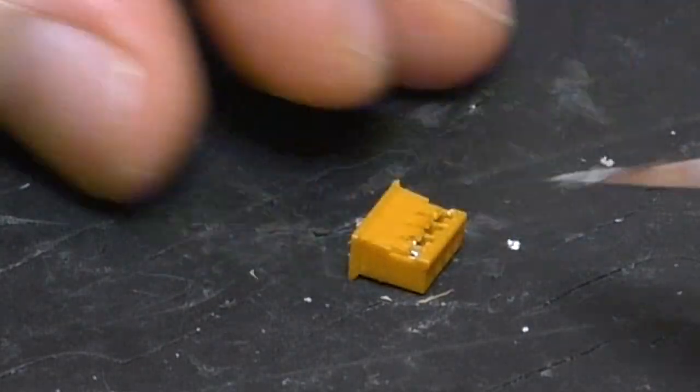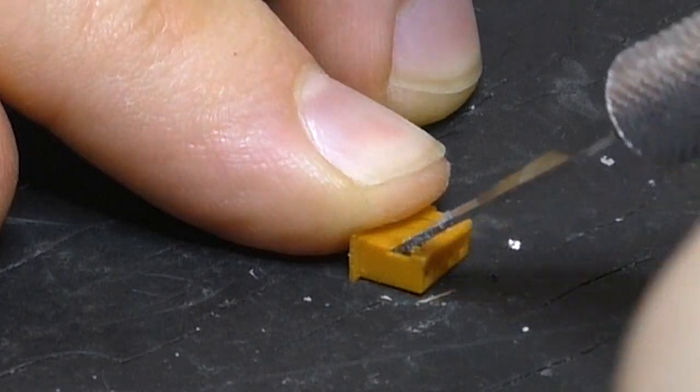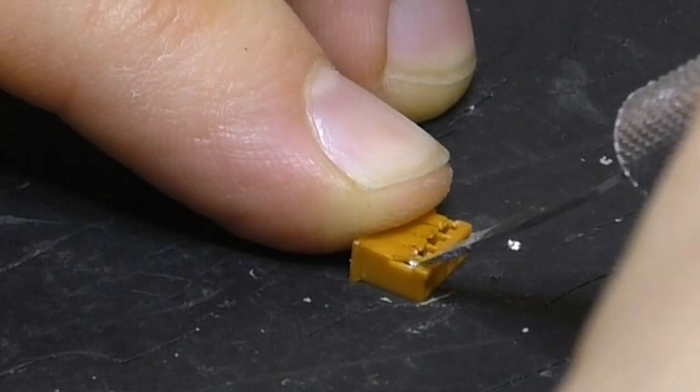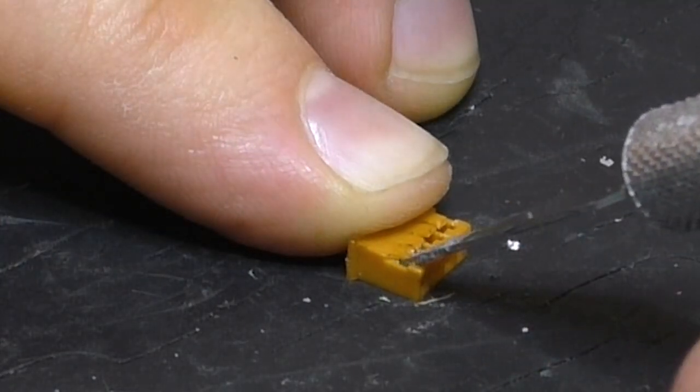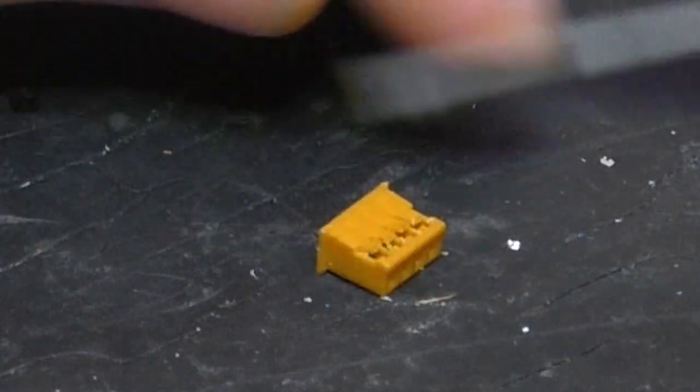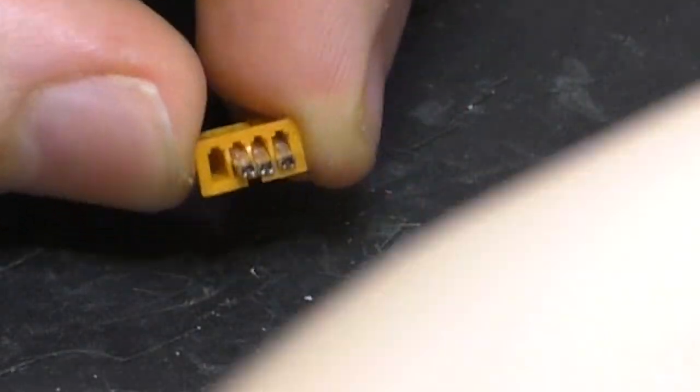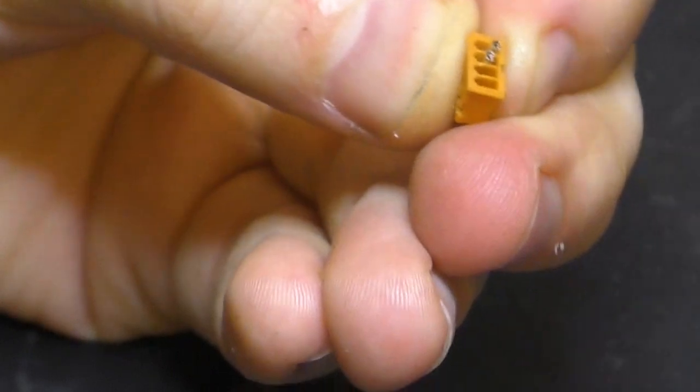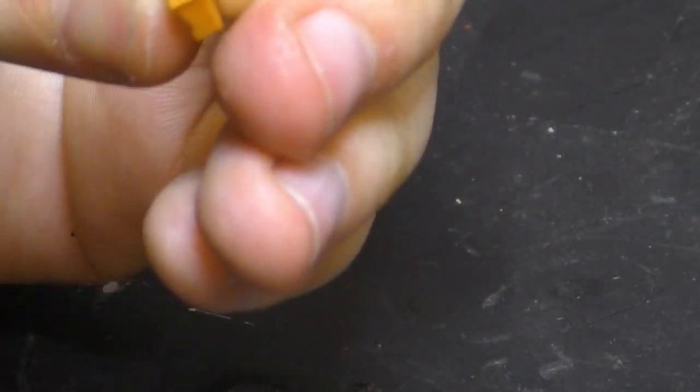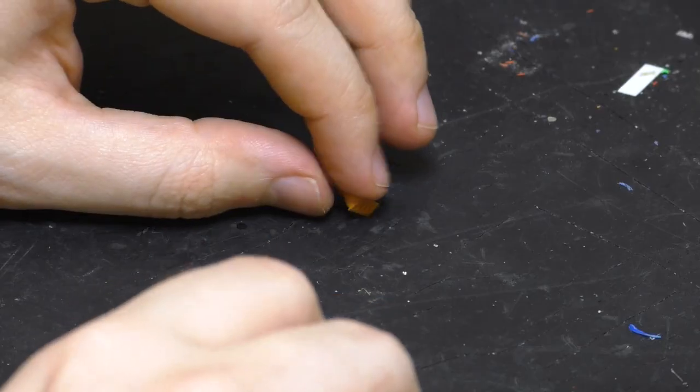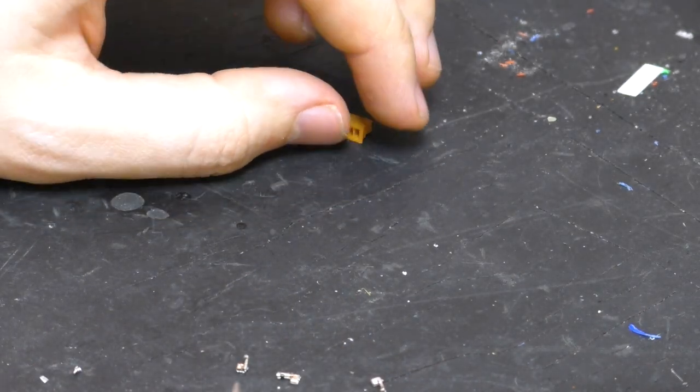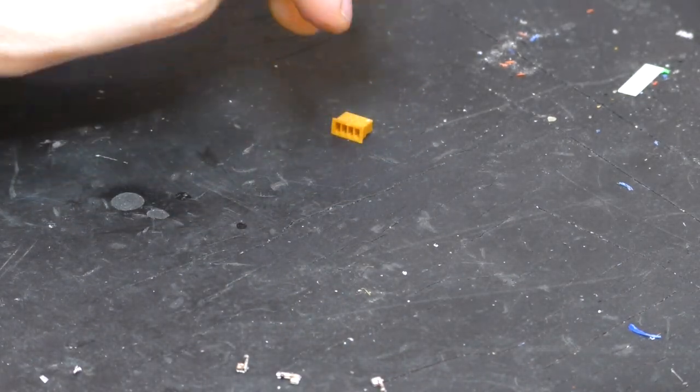It's actually probably a pretty bad idea to be trying to hold this with my finger while I'm doing this, just in case the knife slips. But, do as I say, not as I do, I guess. Also if you're not quite as near sighted as I am, you'll probably want to use a magnifying glass for this. All right, and now we have four tiny little things that will very easily get lost, but hopefully not.